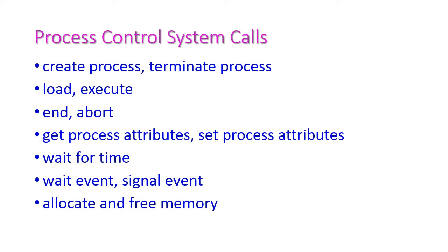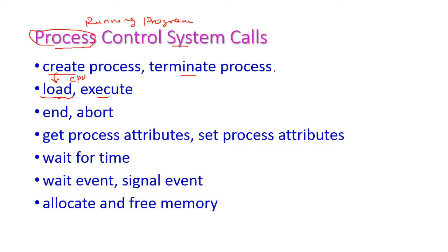First, let us see something about the process control system calls. A process is nothing but a running program — a program under execution is called a process. We have a separate system call for creating the process and terminating the process. Once we create the process, we need to load that process into the CPU, and then only we can execute it. So we have a separate system call for load and a separate system call for execute.